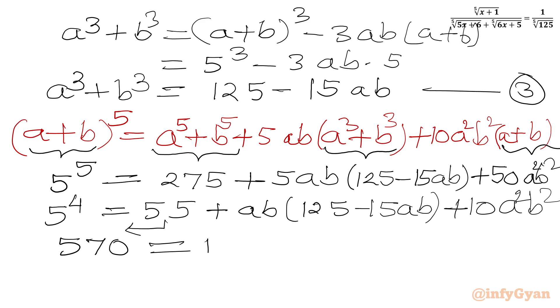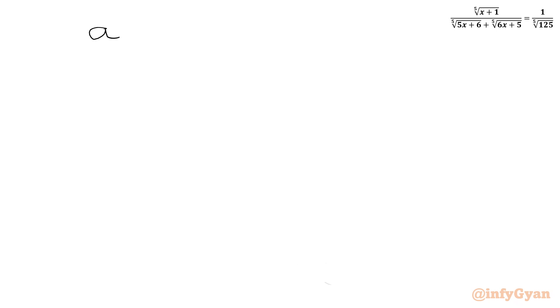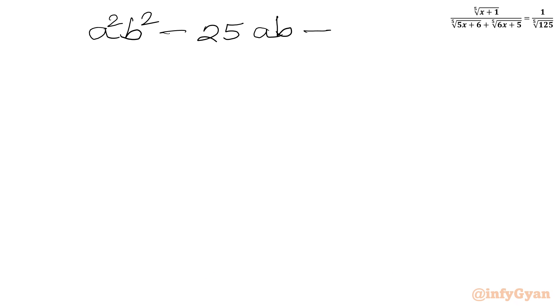In the RHS we write 125ab minus 15a²b² plus 10a²b², giving minus 5a²b². Dividing both sides by 5, we get 114 equals 25ab minus a²b². Taking all terms to one side, we write our quadratic equation in ab: a²b² minus 25·ab plus 114 equals 0.